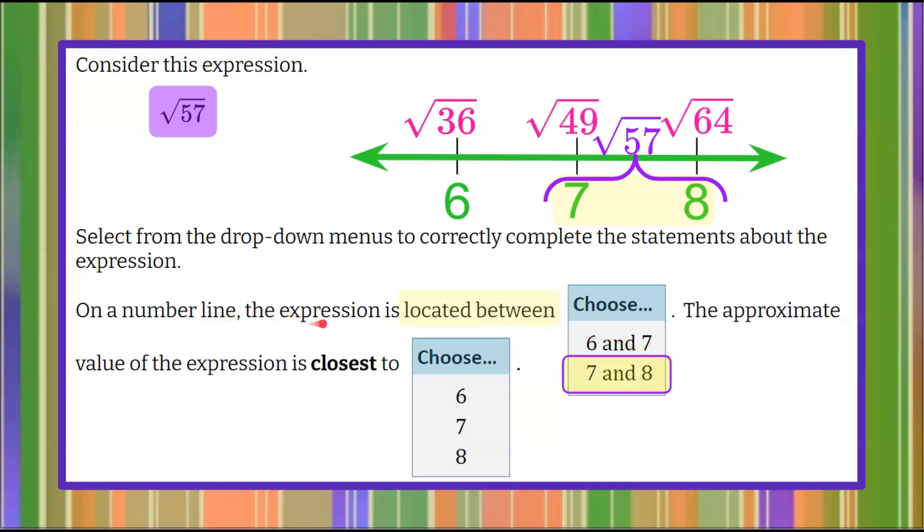So on a number line the expression is located between 7 and 8. Now the second statement. The approximate value of the expression is closest to 6, 7, or 8.